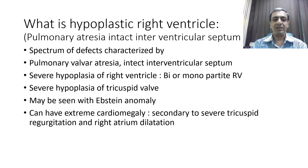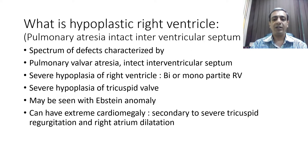This is a wide spectrum of disease. The most important thing to remember is there is pulmonary valvar atresia and the interventricular septum is intact — there is no ventricular septal defect. The RV is generally severely hypoplastic and may have only one or two compartments. Normal RV has three compartments: inlet, trabecular portion, and outlet.